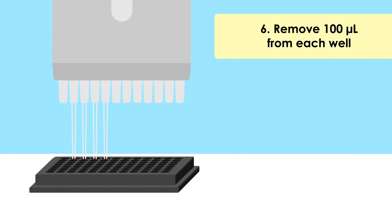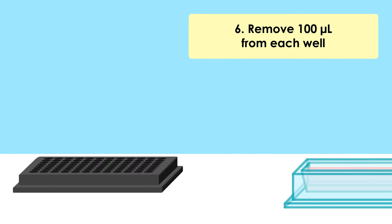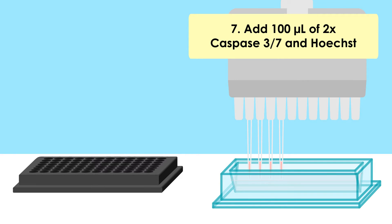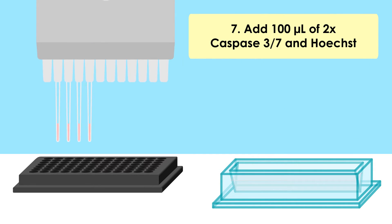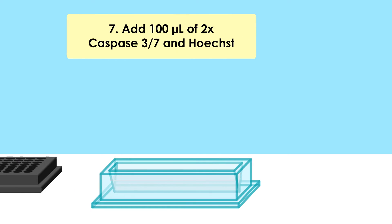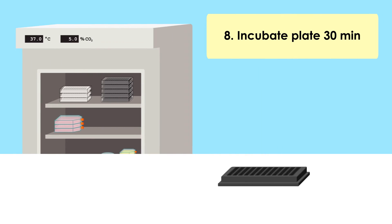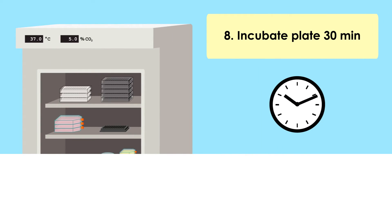After the incubation, remove 100 microliters from each well and add 100 microliters of 2x concentrated Caspase 3-7 and Hoechst staining solution to each well. Allow the plate to incubate at 37 degrees for 30 minutes.